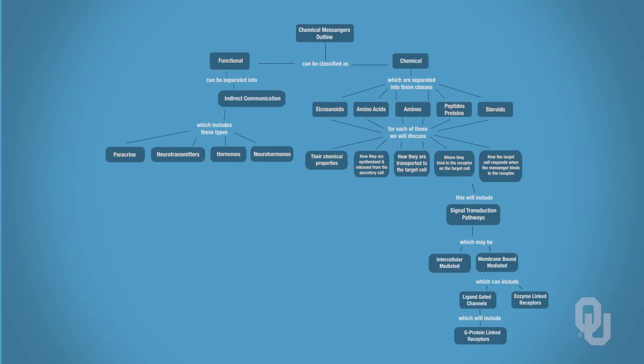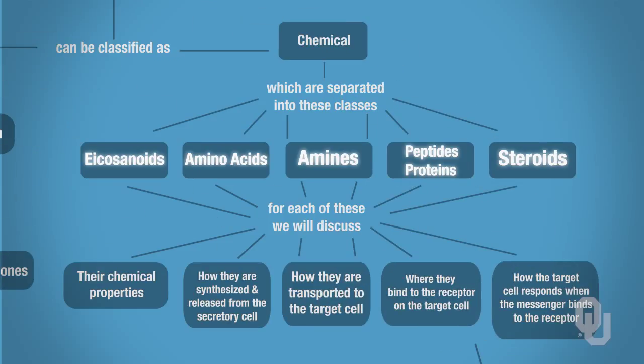We come back to our outline, and on our outline now we're going to focus specifically on these classes of chemical messengers. This will just be some general information that you'll need to commit to memory so that you can apply this information in subsequent sections.